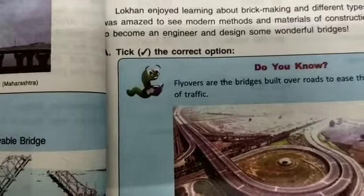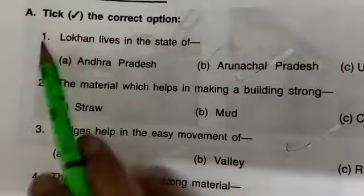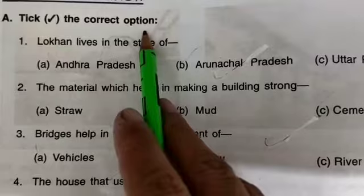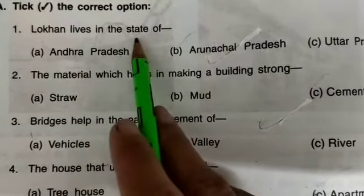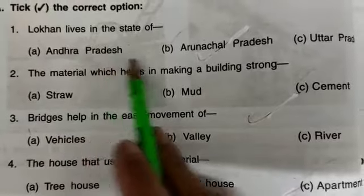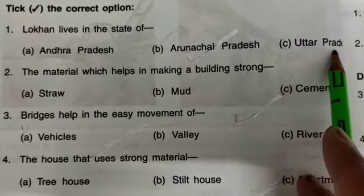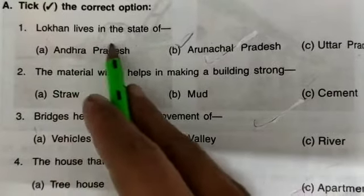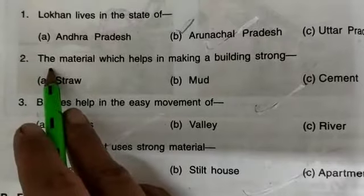Today I will take the exercise of this lesson, which is given on page number 40. Exercise A: Tick the correct option. Number one — Lokhan lives in the state of: option A, Andhra Pradesh; option B, Arunachal Pradesh; option C, Uttar Pradesh.